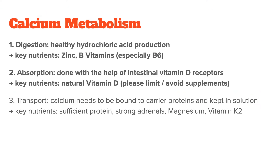When you look at steps one and two — digestion and absorption — you will see that they can easily be fixed: step one by supplementing zinc and vitamin B, and step two by increasing your natural vitamin D levels. I'm not a big fan of vitamin D supplements, and instead recommend sunbathing or cod liver oil for natural vitamin D. For more details, please watch my video on how to take vitamin D.